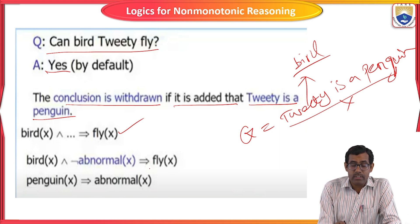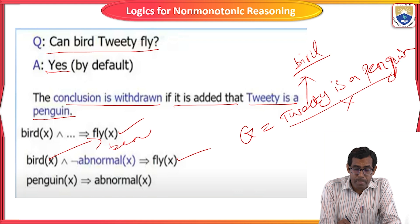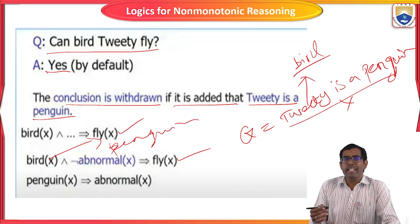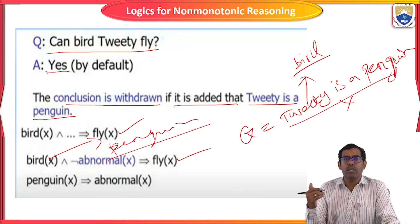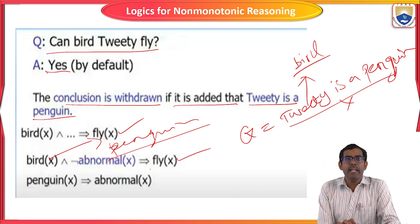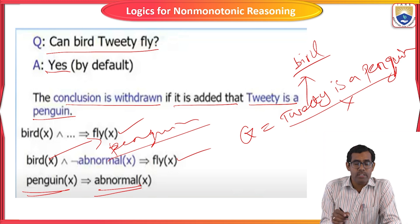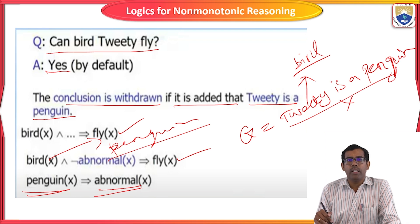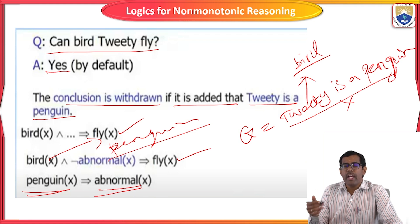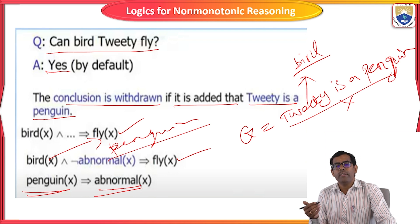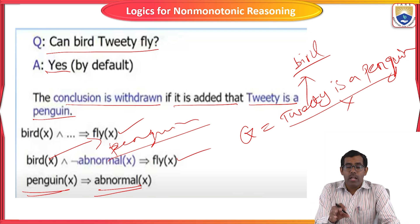We use the logic: bird(X) → fly(X). If the statement is correct, Tweety is a bird, it will fly. Then: bird(X) and abnormal(X) → fly(X). Now if this bird is a penguin, the penguin is abnormal — it cannot fly. The penguin always swims in the water; it cannot fly in the sky. This is an abnormal statement. Including some wrong logic or new statement with your predicted solution means the statement will become wrong and give unpredictable solutions. This is the example of logic for non-monotonic reasoning.